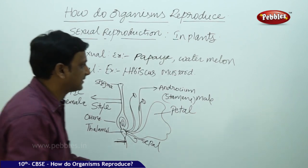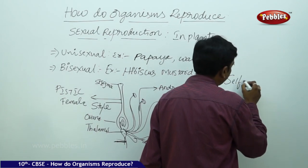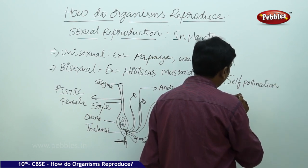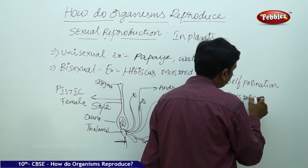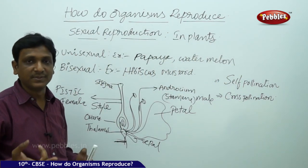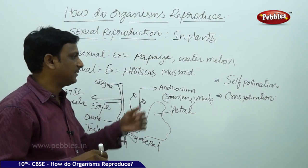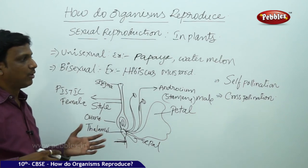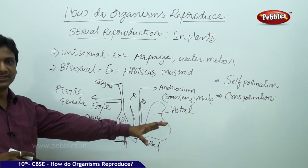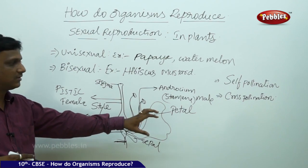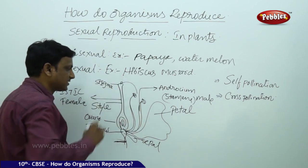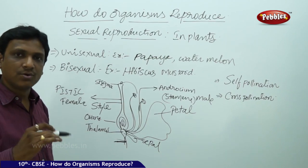If pollination takes place within the same flower, it is called self-pollination. If it takes place between two different flowers of the same species, it is called cross-pollination. Whether self- or cross-pollination, it happens with the help of agents like wind, water, or insects — with insects making the major contribution to pollen transfer.